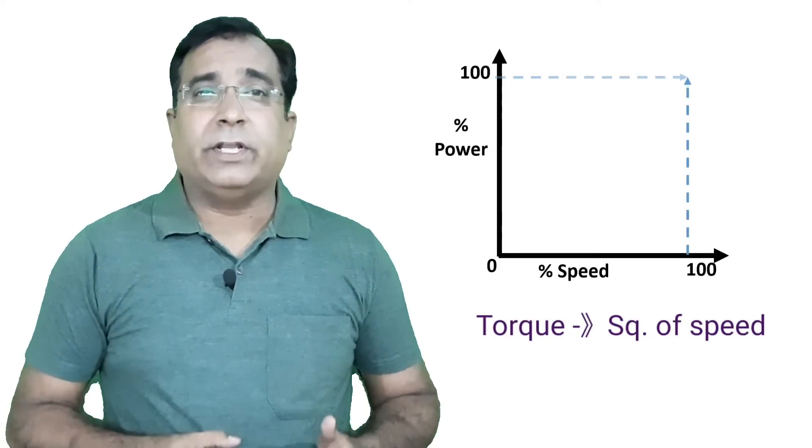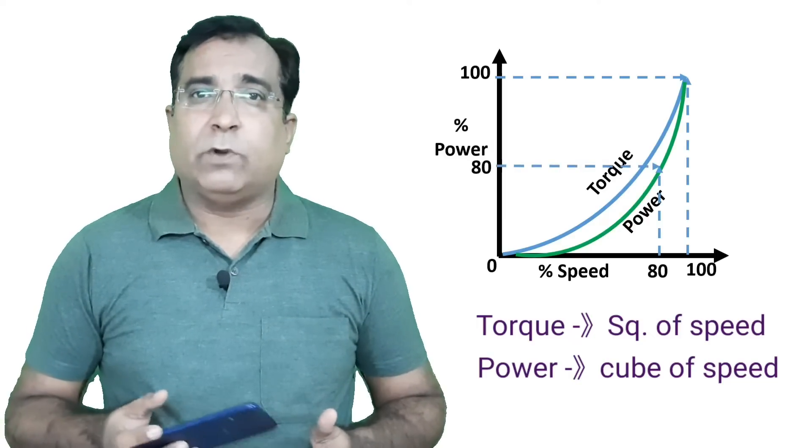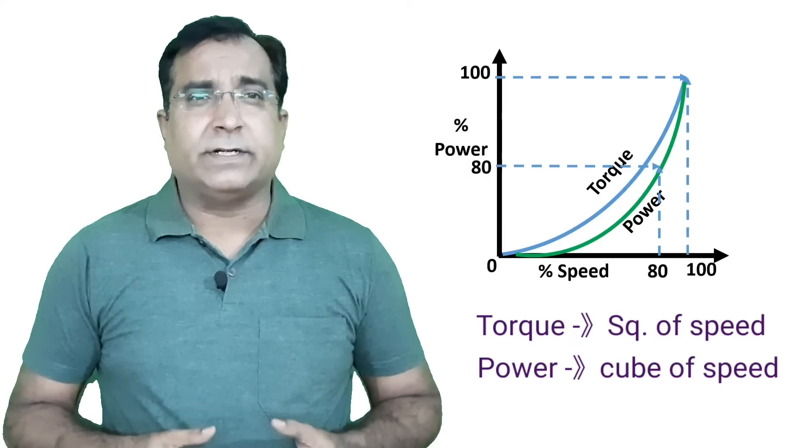Here, required torque is varied according to the square of speed and power varies according to the cube of speed. This category includes centrifugal, axial pumps, fans, blowers, many mixers and agitators.